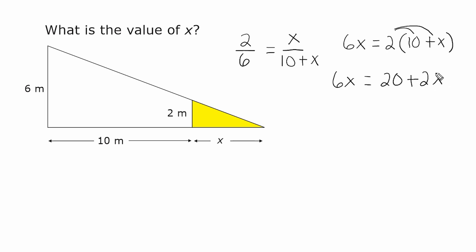Now what I'm going to do is I'm going to take this term right here, 2x, and move it to the other side of the equation. And the opposite of positive 2x, of course, is negative 2x. So I'm going to subtract 2x from 6x which leaves us with 4x is equal to 20.